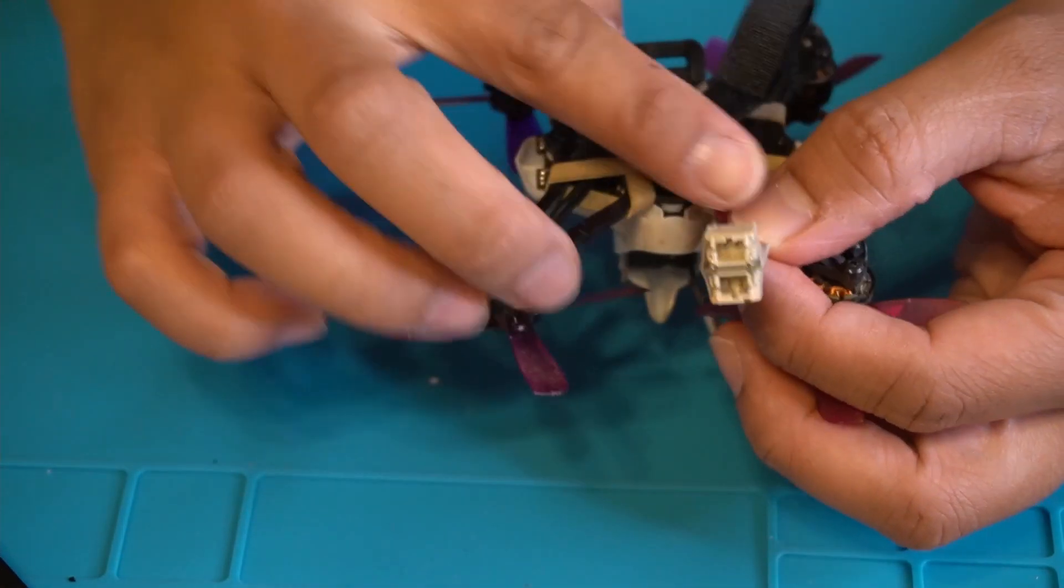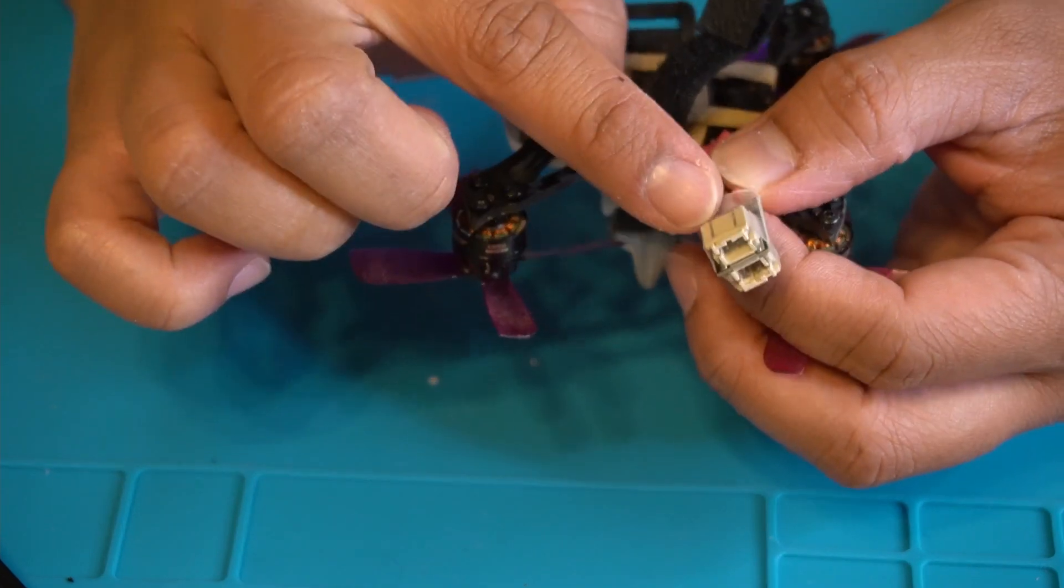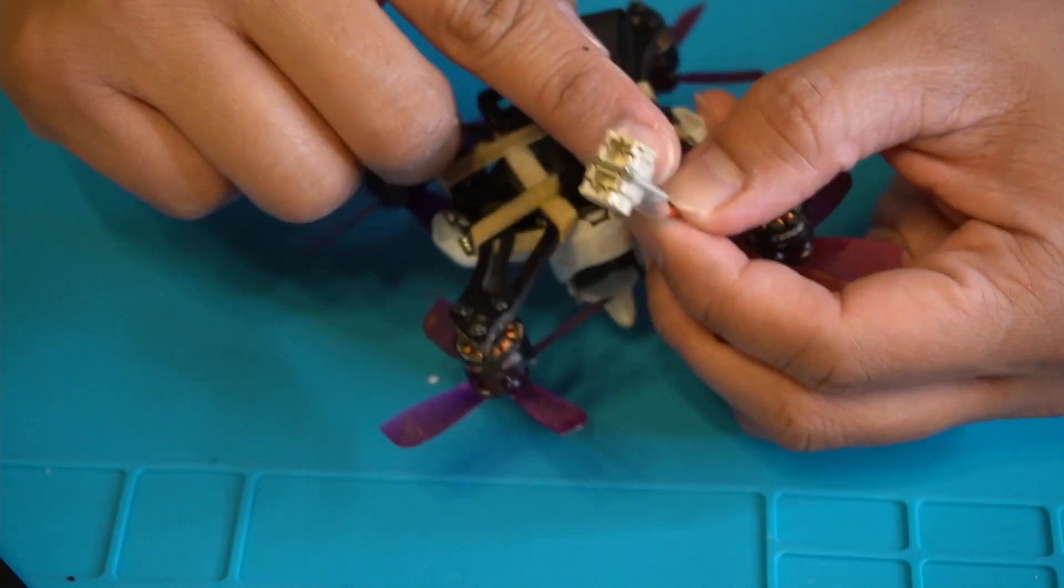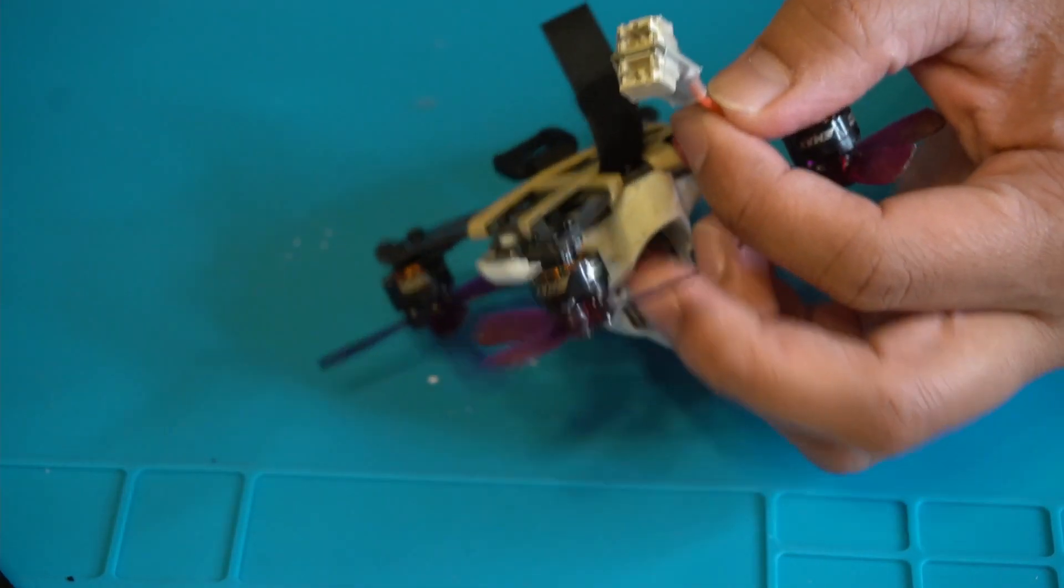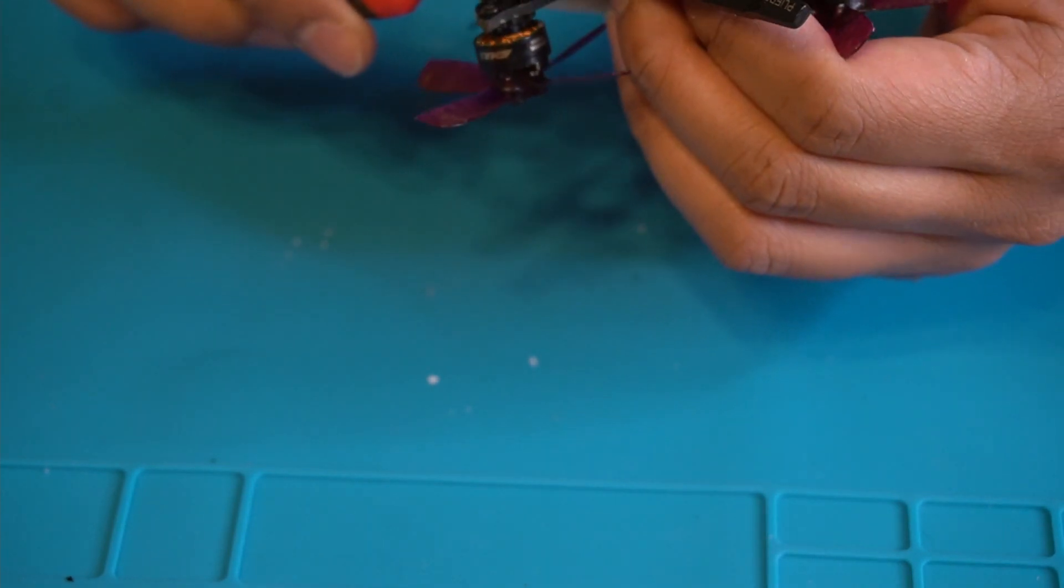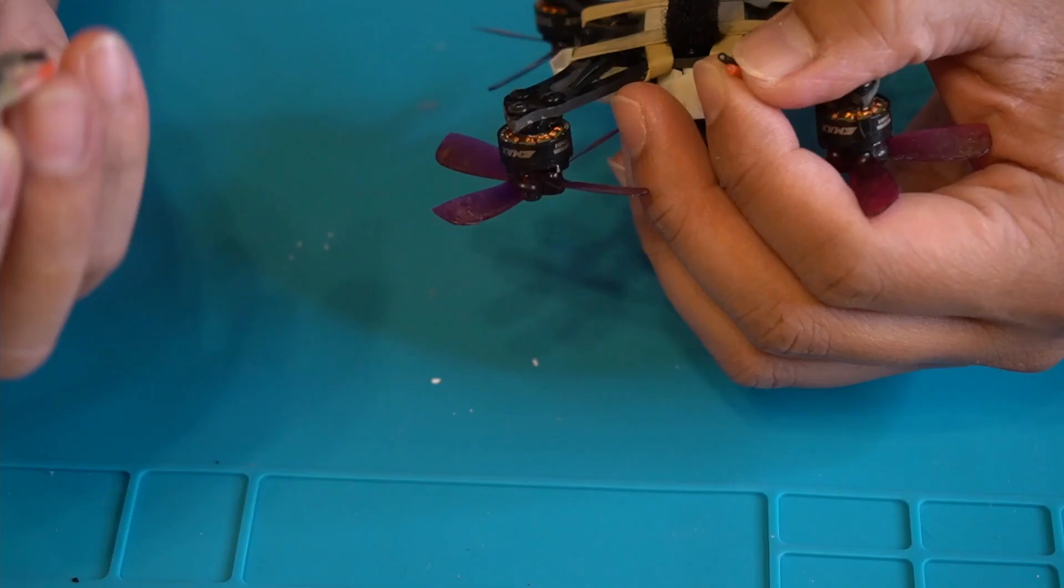First, we're going to cut off this. Do not throw this away, we can actually make an adapter. Basically what we're going to do is just take our wire cutter, chop it off across. Here, I did it, easy. No turning back now.